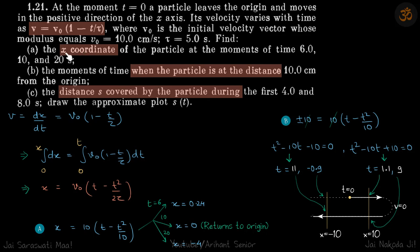First, the x coordinate. Velocity is a function of time, so if we write velocity as dx by dt, then we can calculate x. We'll write v in the form of dx by dt, then cross multiply and integrate x from 0 to x and t from 0 to t.